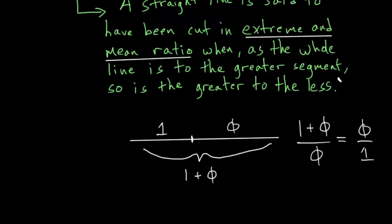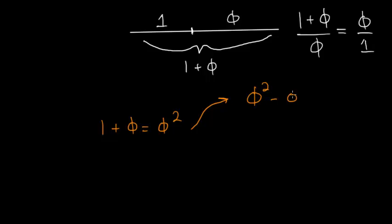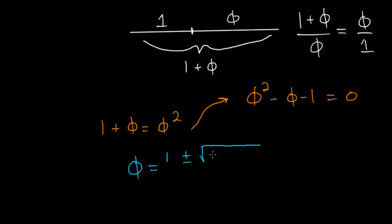Now that we have an equation, we can solve for phi. Multiplying both sides by phi, we have that 1 plus phi is equal to phi squared. Since we have a quadratic equation, we can set one side equal to 0 and use the quadratic formula. So phi squared minus phi minus 1 is equal to 0. Using the quadratic formula, we have phi equals 1 plus or minus the square root of 1 minus 4 times negative 1, all divided by 2. Simplifying, the negative cancels to give a plus.